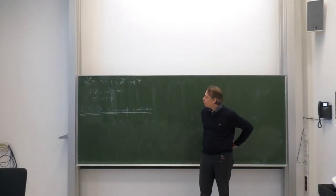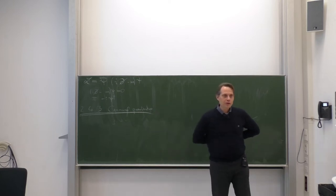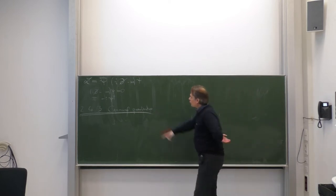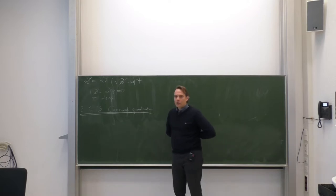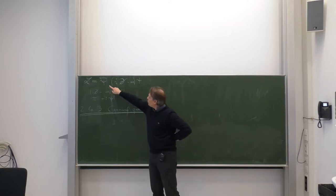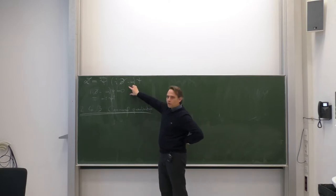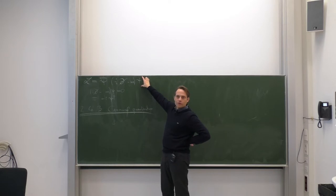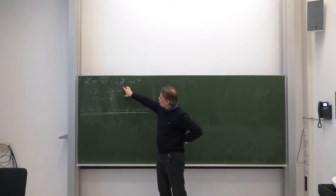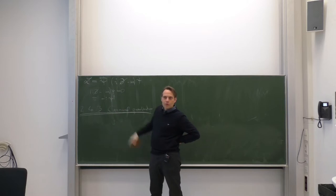Welcome back. Let us continue with our quantization of the Dirac field. I have written here once again some highlights of the last lecture. This is the Lagrangian of the Dirac field, psi-bar i d-slash minus m psi. This is the Euler-Lagrange equation, which is the equation of motion corresponding to this Lagrangian. It is the Dirac equation: i d-slash minus m, psi equals zero.